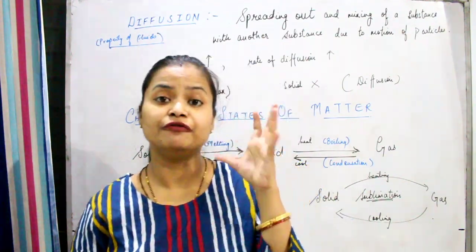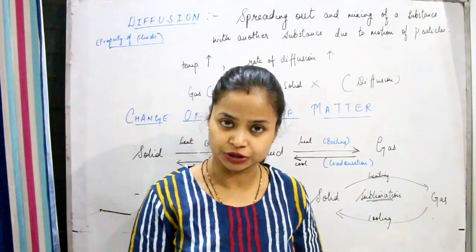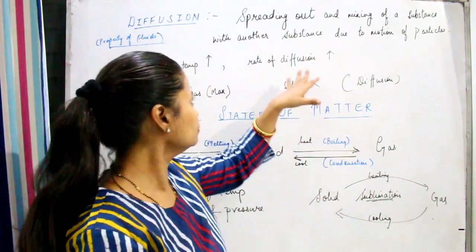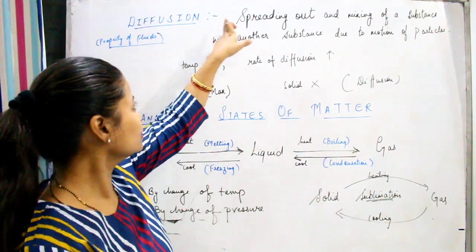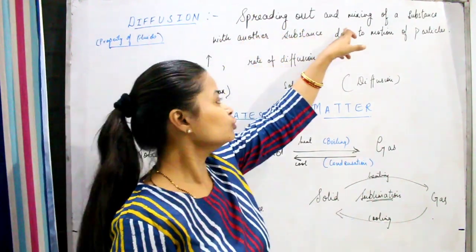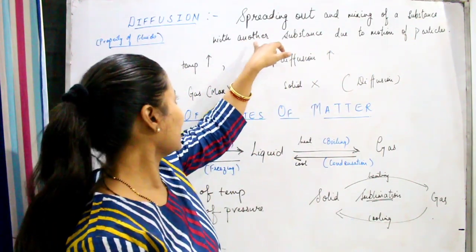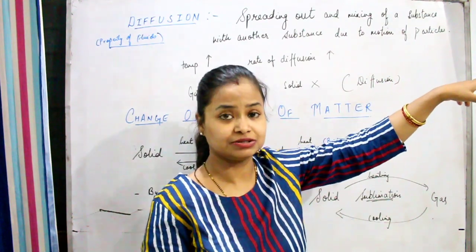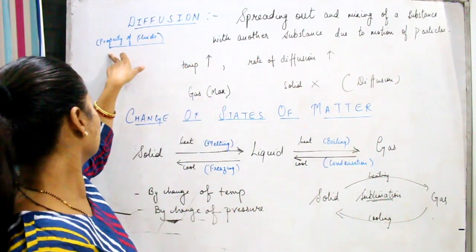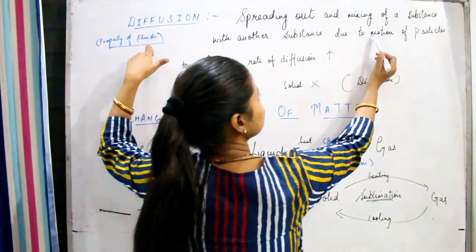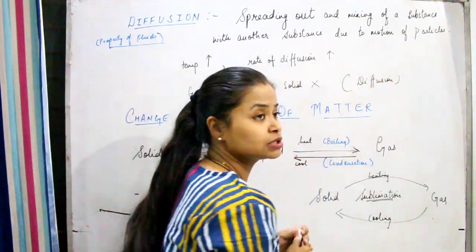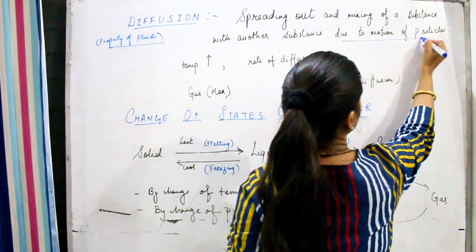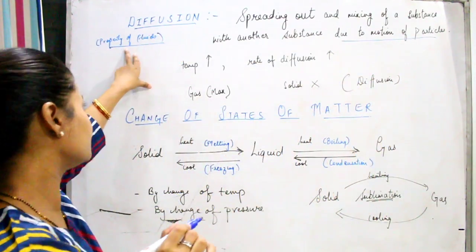Now let us study a very important property of matter: diffusion. Spreading out and mixing of a substance with another substance due to the motion of particles is known as diffusion. This is the property of fluids, because the particles of fluids move, and therefore diffusion occurs due to motion of particles.